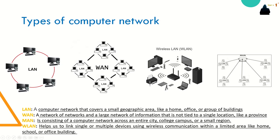A MAN is a network infrastructure that spans a physical area larger than a LAN but smaller than a WAN — for example, a small city. MANs are typically operated by a large organization. We also have WLAN, or wireless LAN, which is similar to a LAN but the connection happens wirelessly within a small geographical area.